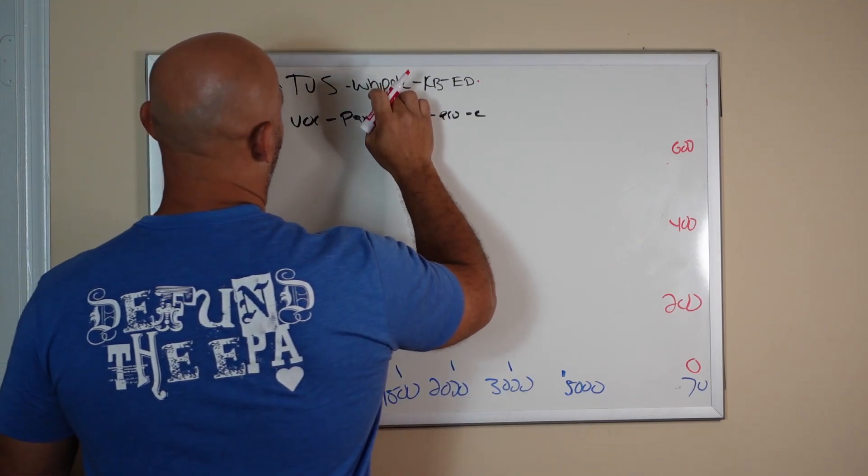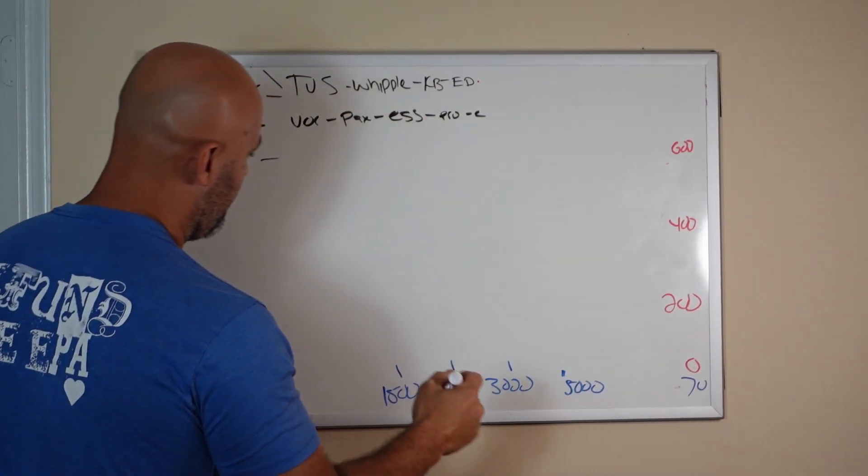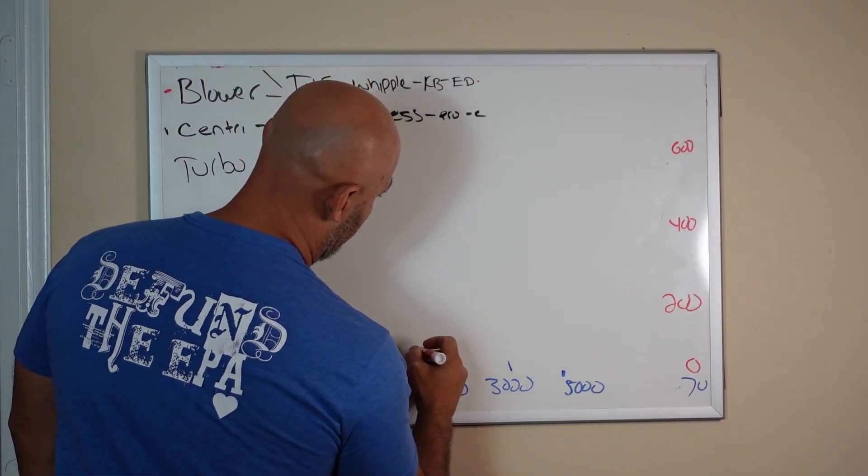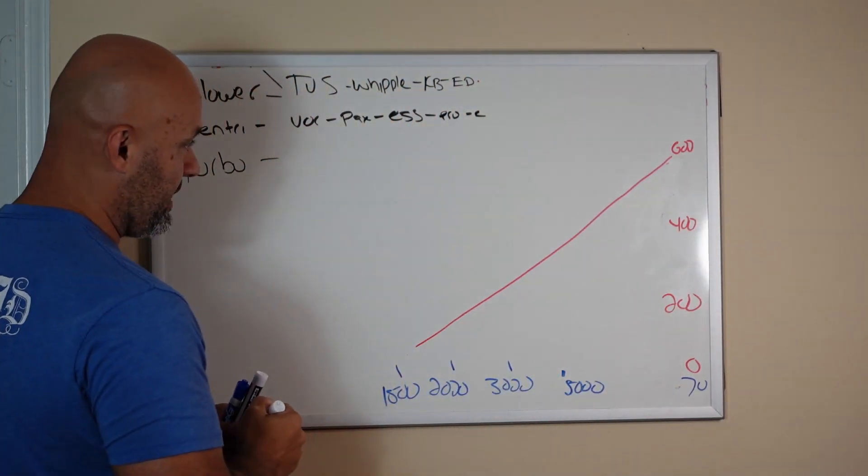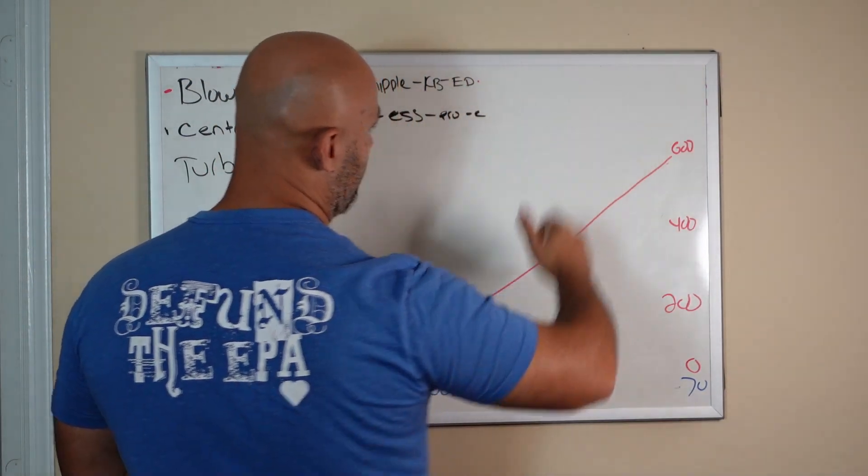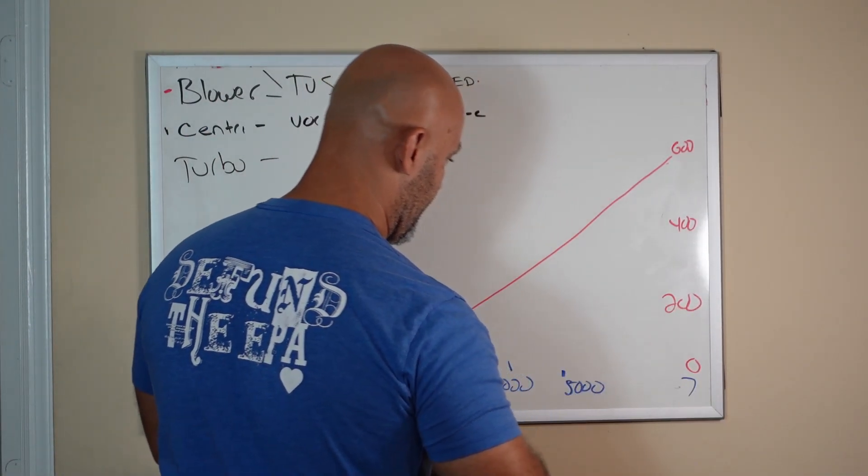But Whipple, Kenny Bell, and Edelbrock is also a TVS. Whipple and Kenny Bell make really good high RPM horsepower, but generally horsepower is similar. Let's say you're pulling for the same amount of boost, and this thing is really getting after it and it's making about 600 or so over 7000 RPMs, 7K.